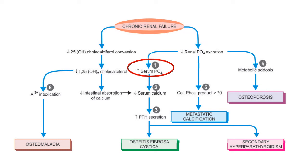On the other hand, hyperphosphatemia results in an increased calcium-phosphate product exceeding 70, leading to metastatic calcification. Metabolic acidosis leads to osteoporosis. Decreased conversion of cholecalciferol into its active form in chronic renal failure reduces calcium absorption from the intestine, further lowering serum calcium. Additionally, abnormal deposition of aluminium from dialysis fluid results in osteomalacia.